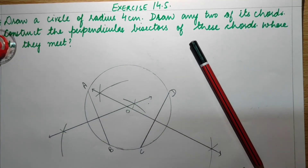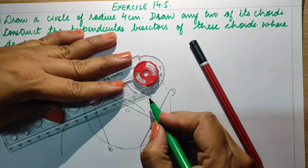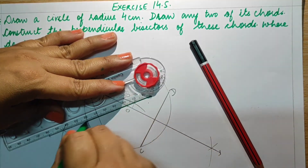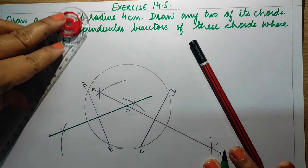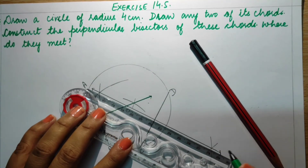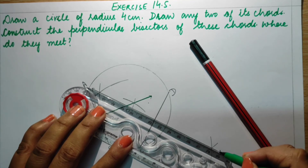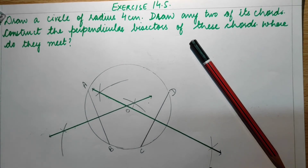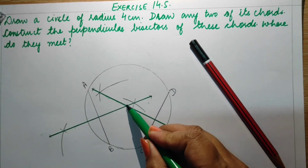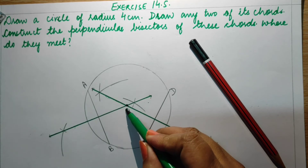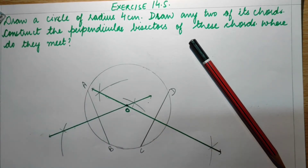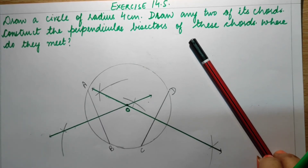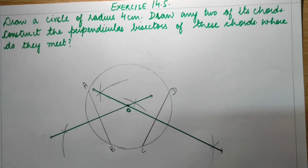Let me highlight this for you. This was the first perpendicular bisector — I am going to highlight it. You need not do this; use a pencil only. This is the second bisector. You can check where they meet — they are meeting at this point, which is the centre of the circle. So they meet each other at the centre of the circle.